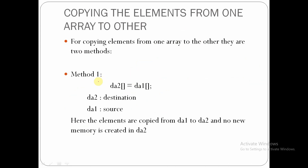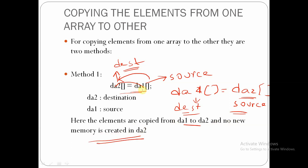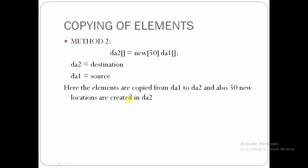Next, copying elements from one array to another. For example, if we want to copy elements from da1 to da2, that is da1 as source and da2 as destination, we use the syntax `da2 = da1`. Alternatively, to copy from da2 to da1, the syntax is `da1 = da2`. Here, elements are copied from source to destination and no new memory is created — no extra memory is allocated, just copying.